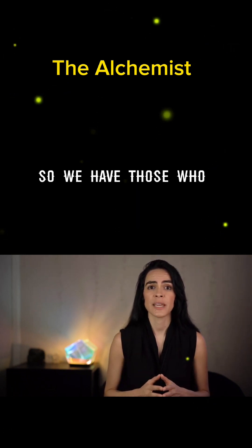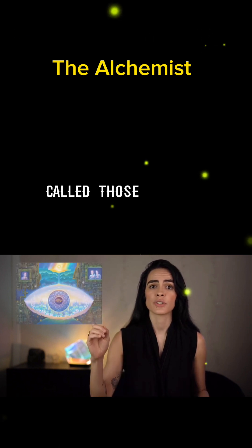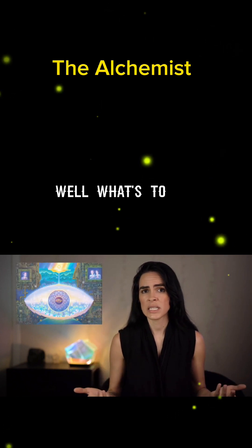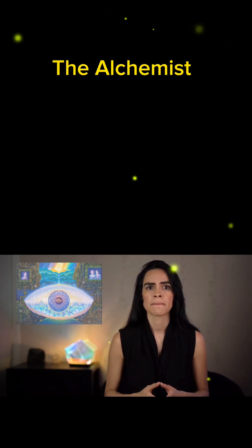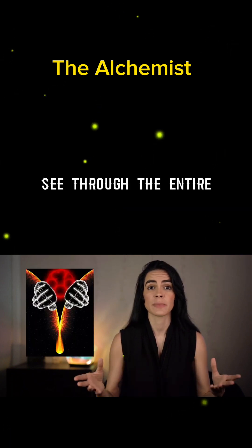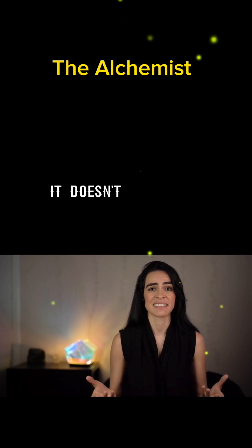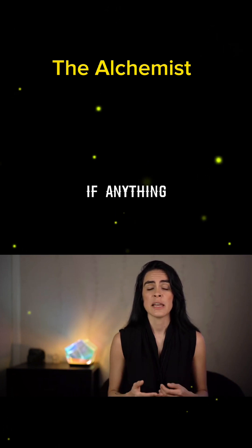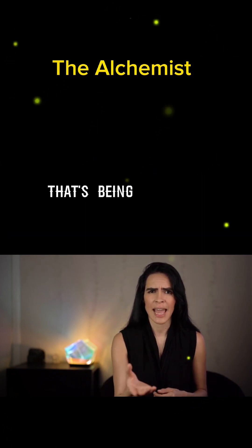So we have those who make up the grouping da Vinci called those who see. Well, what's to see? What's being seen? This is the group of people who very easily see through the entire matrix we are in. It doesn't take much, if anything, because it's more of a remembrance that's being activated.